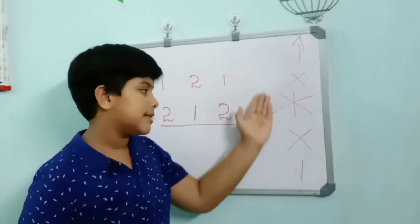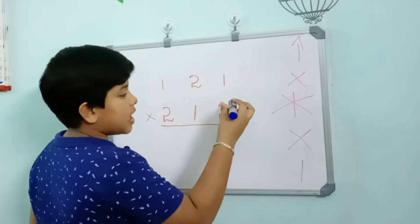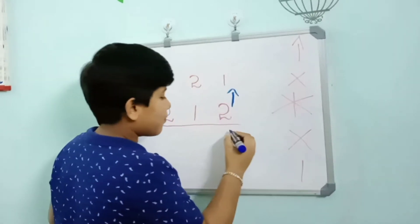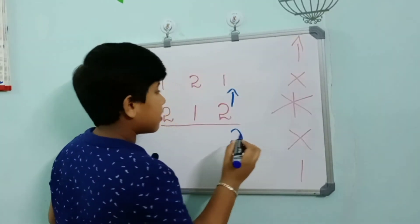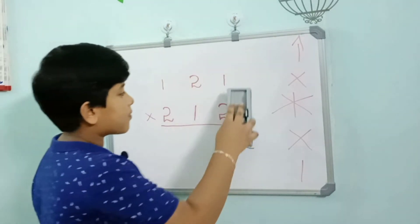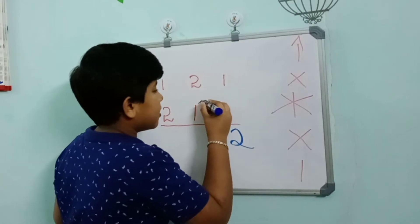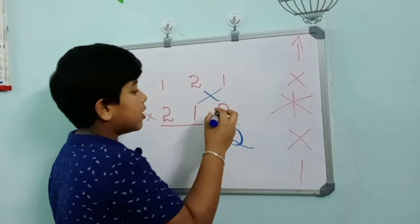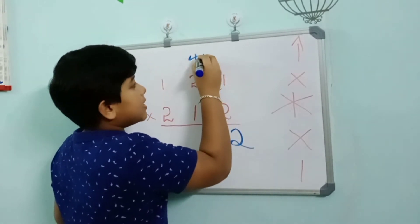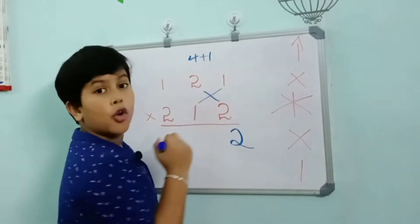The first pattern is upwards: 2 into 1 equals 2. The second pattern is crosswords: 2 into 2 equals 4, plus 1 into 1 equals 1, so 4 plus 1 equals 5.